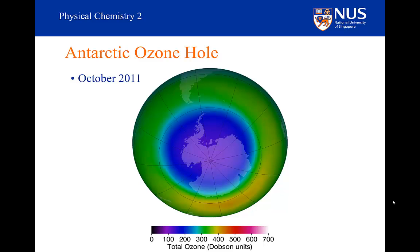Notice what is happening in the centre of the Antarctic continent — values are dropping below 100 Dobson units, meaning over two-thirds of the expected ozone has been lost. In fact, more ultraviolet radiation is measured over Antarctica during springtime than in Los Angeles, due to the severity of the ozone loss.